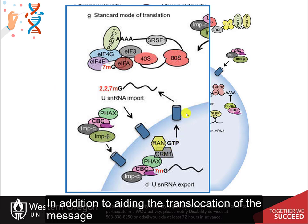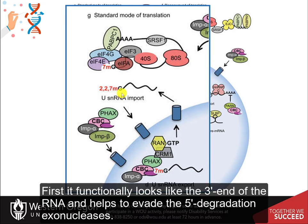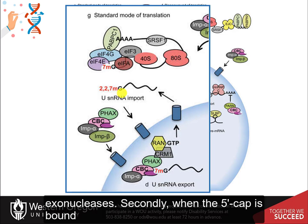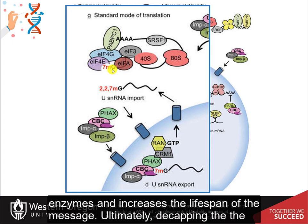In addition to aiding the translocation of the message, the seven-methylguanosine cap also helps protect the messenger RNA from degradation. First, it functionally looks like the three prime end of the RNA and helps to evade the five prime degradation exonucleases. Secondly, when the five prime cap is bound with the initiation factors for the translation process, it hides the cap from the decapping enzymes and increases the lifespan of the message.